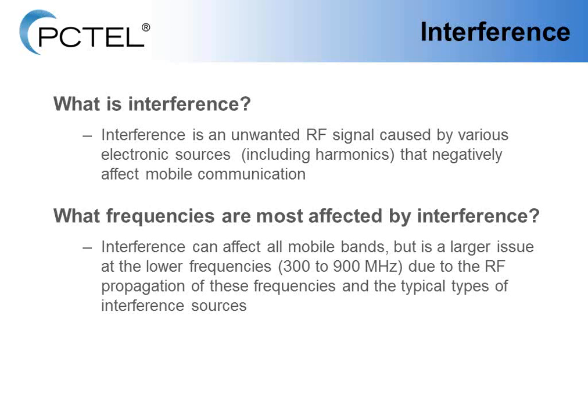To answer the question of what frequencies are most affected by interference: interference can really affect all frequencies and all mobile bands, but it is a much larger issue typically for lower frequencies in the 300 and 900 MHz range, because of the way RF propagates at these frequencies, and also because of the typical types of interference sources that might be causing this external interference, which I'll be getting into in the next few slides.